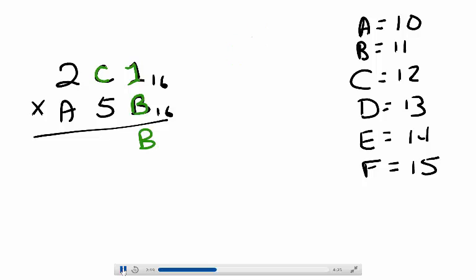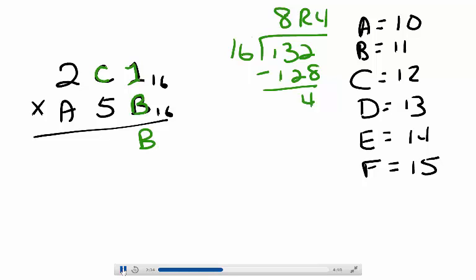Now we find out how many times 16 divides into 132. 16 divides into 132 eight times with a remainder of 4. So we write our remainder here and then we carry the 8, which represents 8 groups of 16.